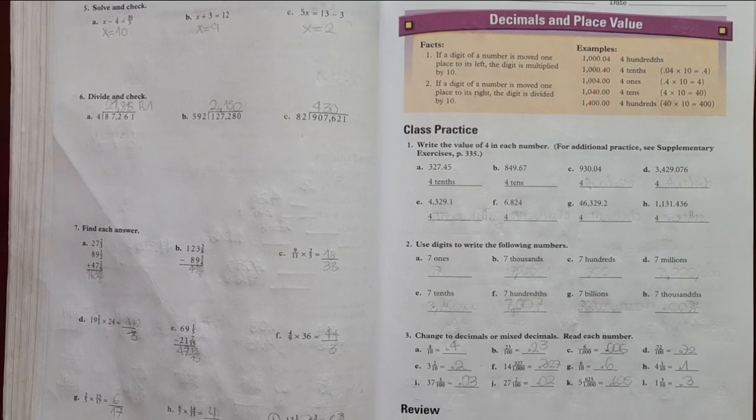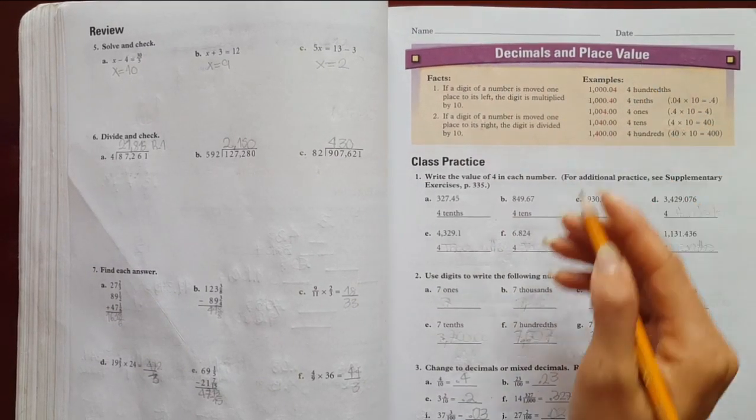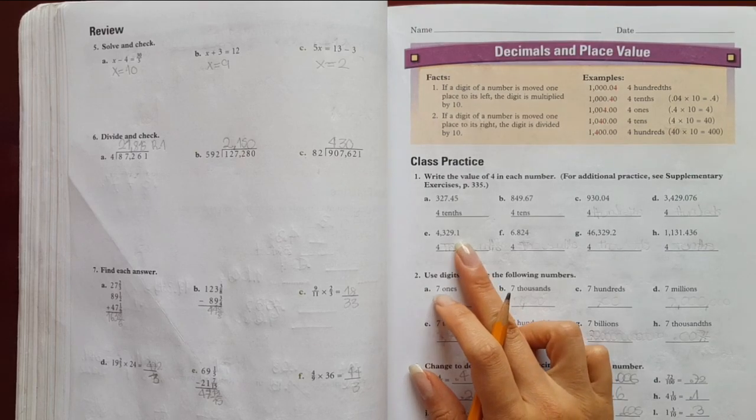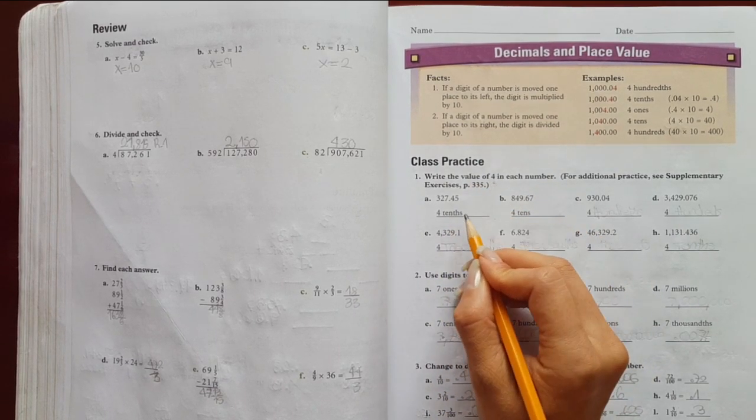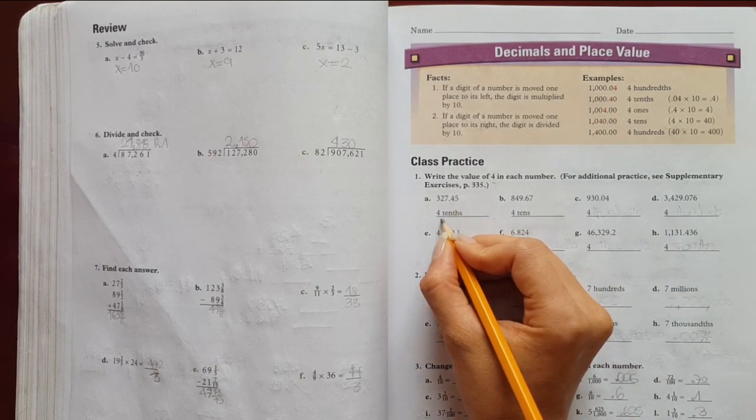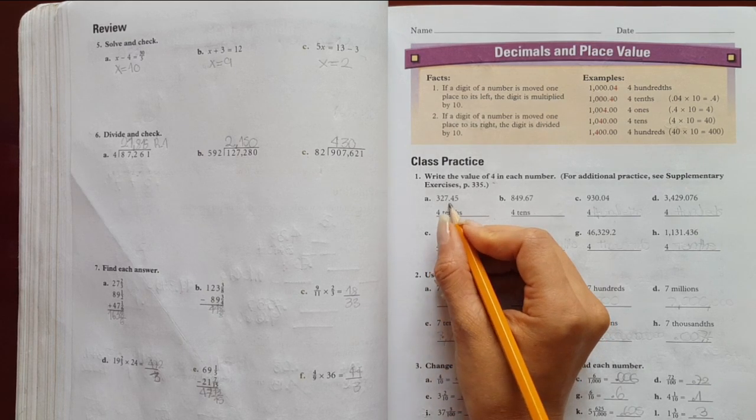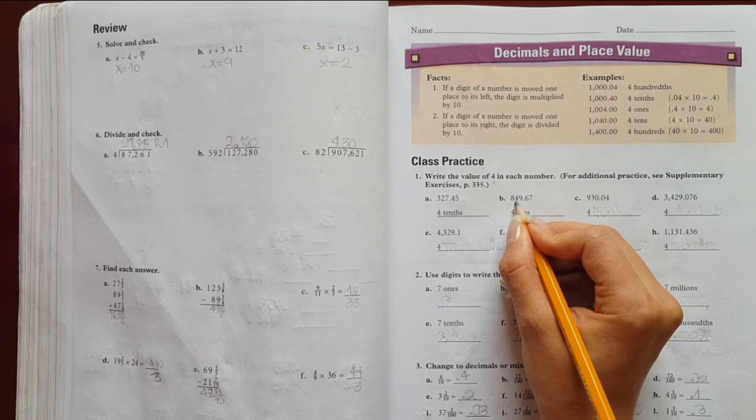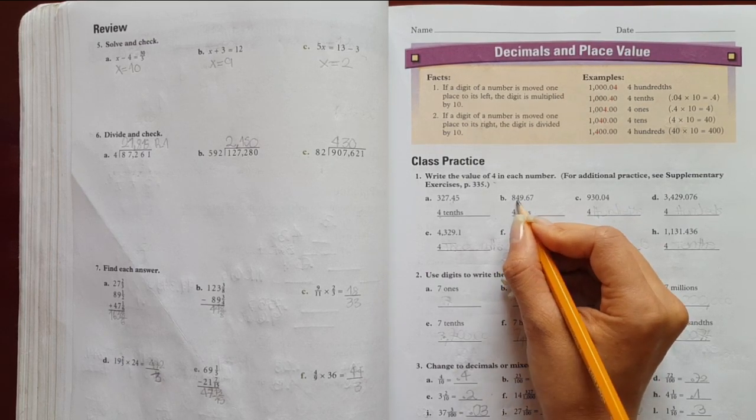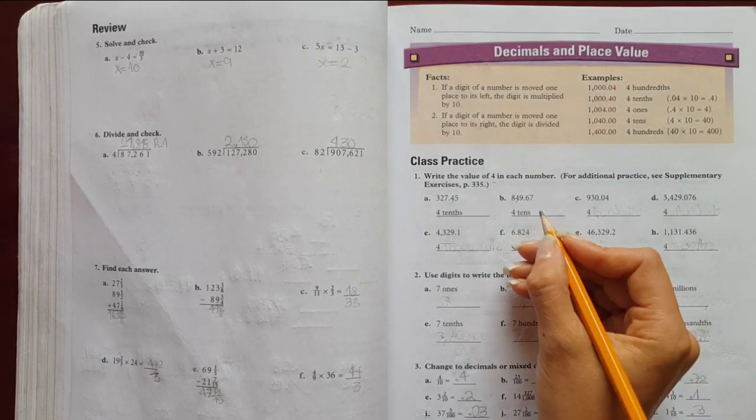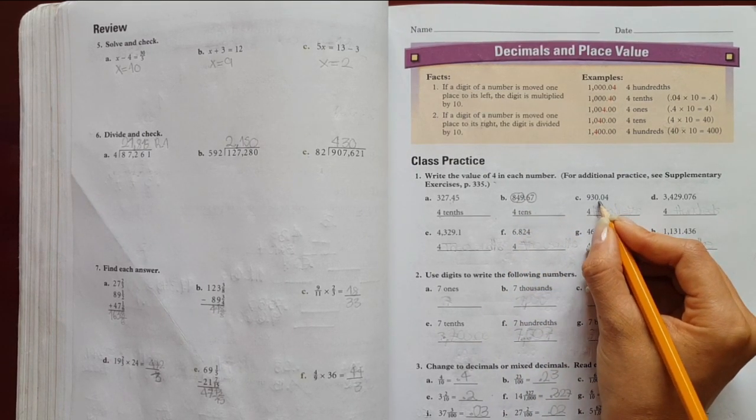Hi guys, we're going to continue here with page number 145. We are going to keep talking about decimals. In point number one, we need to provide the value of four in each number. El número cuatro qué posición tiene en cada número. En este caso, mírenlo acá, nos dieron el primer ejemplo point four - aquí es four tenths. Recuerda que la primera posición es después del punto.